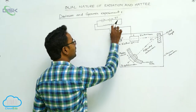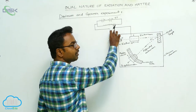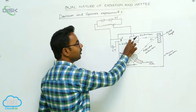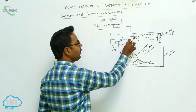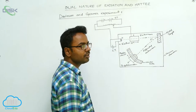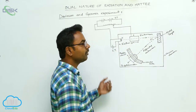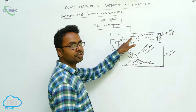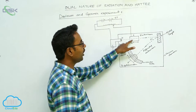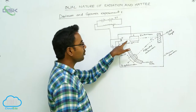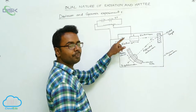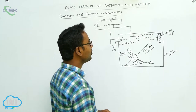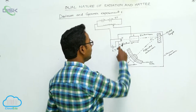Here is a rheostat arrangement. Using this rheostat arrangement, we can change the potential difference between the filament F and box A. As the potential difference between F and A is changed, the velocity of electrons also changes. As the positive potential applied to A is increased, the velocity of electrons also increases. Thus, the required velocity of electrons can be achieved by changing the potential difference between F and A.